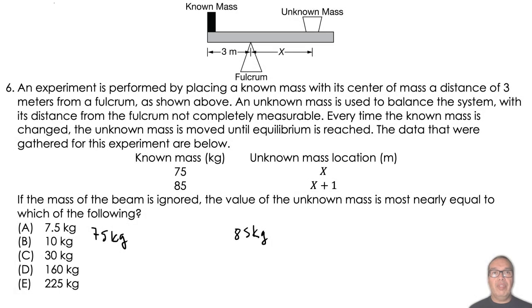If the mass of the beam is ignored, the value of the unknown mass is most nearly equal to which of the following? Since we are dealing with two different known masses, we basically have two different equilibrium situations. Therefore, we can apply the principle of rotational equilibrium to each of the situations separately.